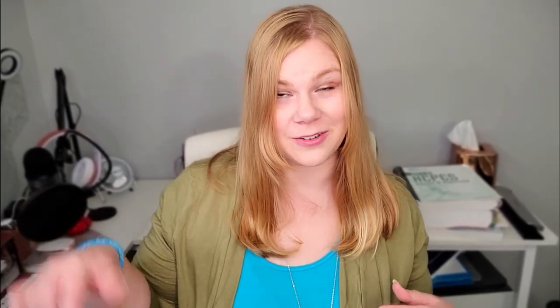Also be aware when a panel is included in another panel. In this example, the comprehensive metabolic panel is included in the general health panel. To report 80050, all tests in the comprehensive metabolic panel and in the general health panel have to be performed. Code 80053 would not be reported in addition to 80050. Also pay attention to those parenthetical notations that are in the organ or disease-oriented panels.